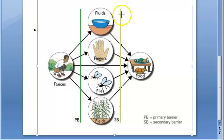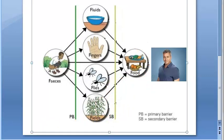Then there is a secondary barrier here which will protect the susceptible host. So finally who is protected? The susceptible host. Here we have put Joey's photo.